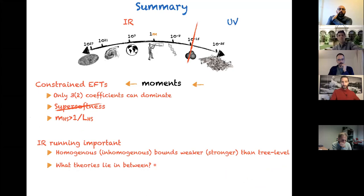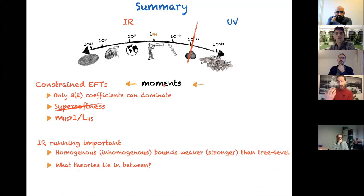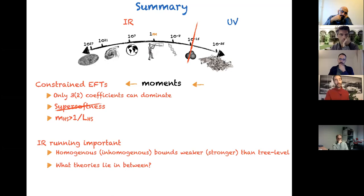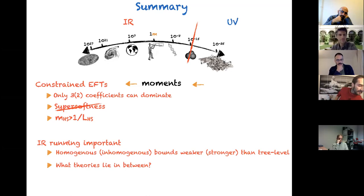Let me summarize. I presented an infrared region where we want to understand EFTs, and a UV region where we only assume causality and unitarity. Using the idea of moments allows us to extract all possible constraints on EFTs. There are only two or three coefficients that can ever dominate the amplitude at tree level. In particular, super-softness is never realized, higher spins are always heavier than their inverse size, and infrared running is important for the bounds. Thank you very much.